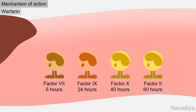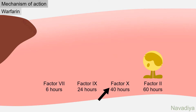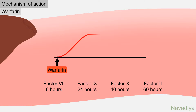Looking at individual clotting factors, factor 7 is the first to disappear — its half-life is about 6 hours, the shortest of all. Then factor 9, with a half-life of about 24 hours, is second to disappear. Then factor 10, whose half-life is about 40 hours. Factor 2 stays the longest, with a half-life of about 60 hours, so it takes 3 to 4 days for its level to drop. The effect of warfarin starts developing from the first day but is completely developed only by 3 to 4 days.